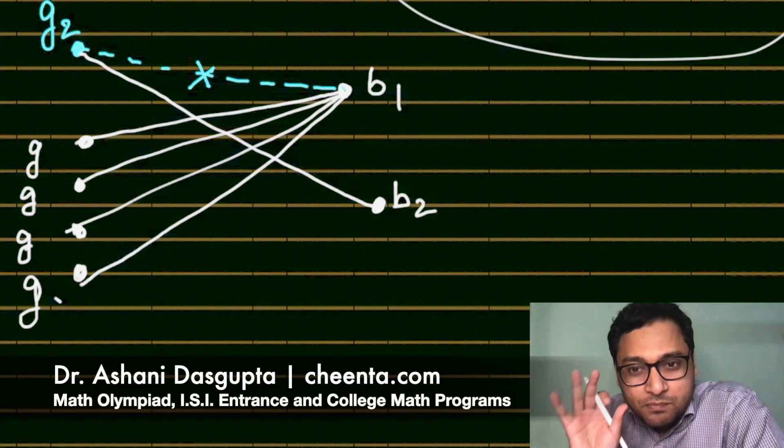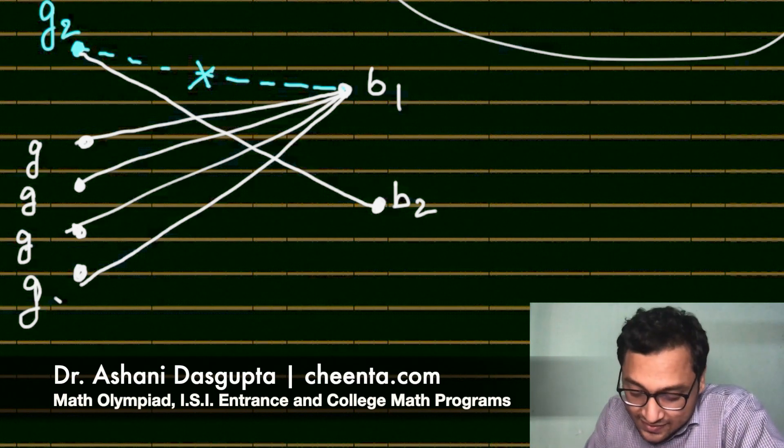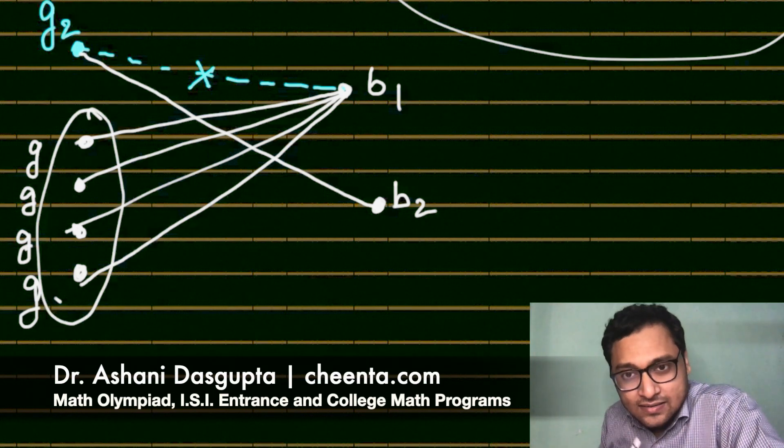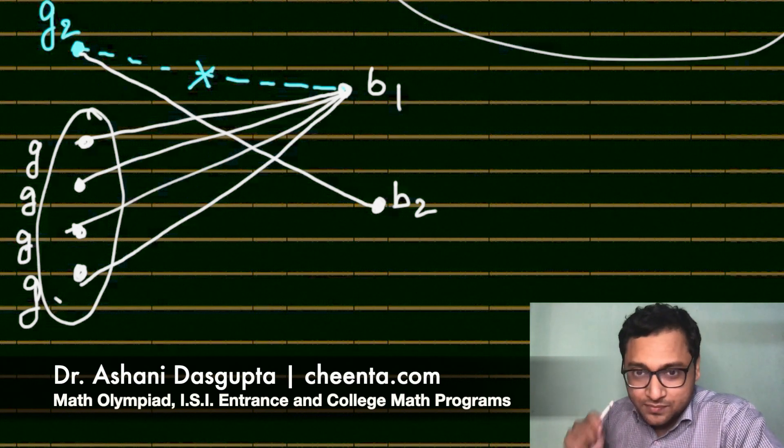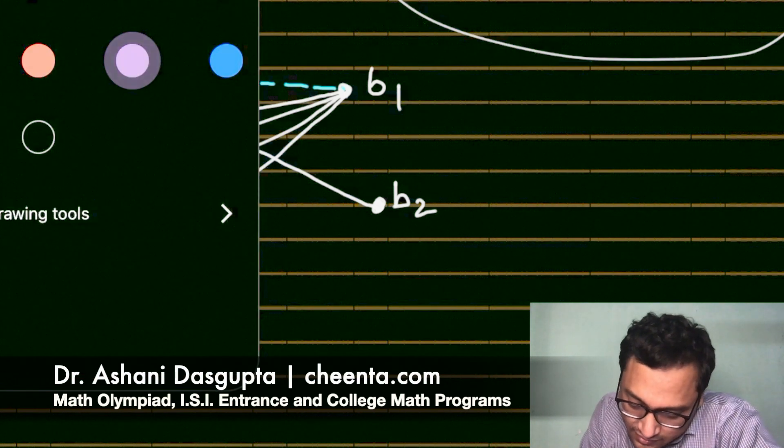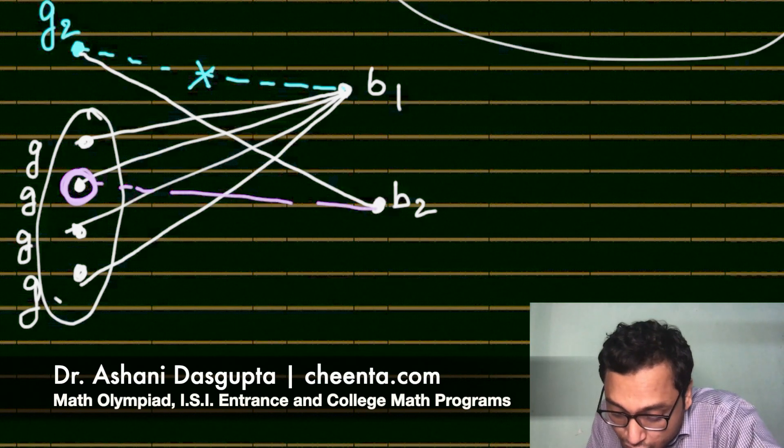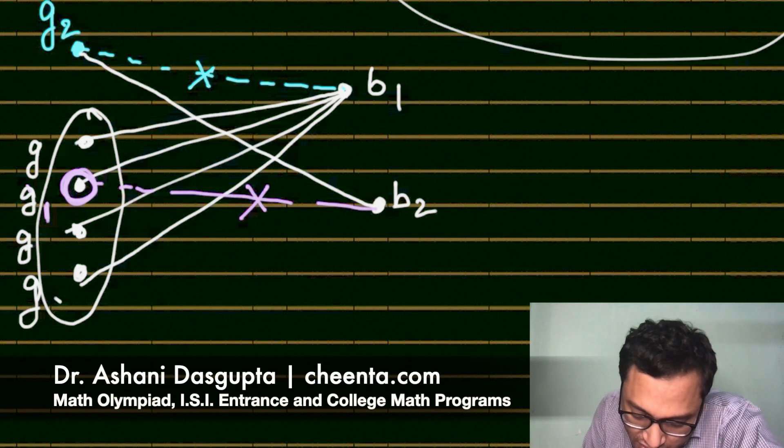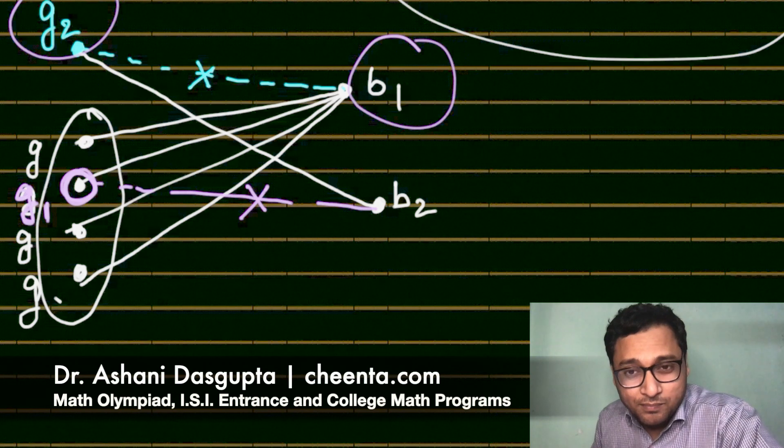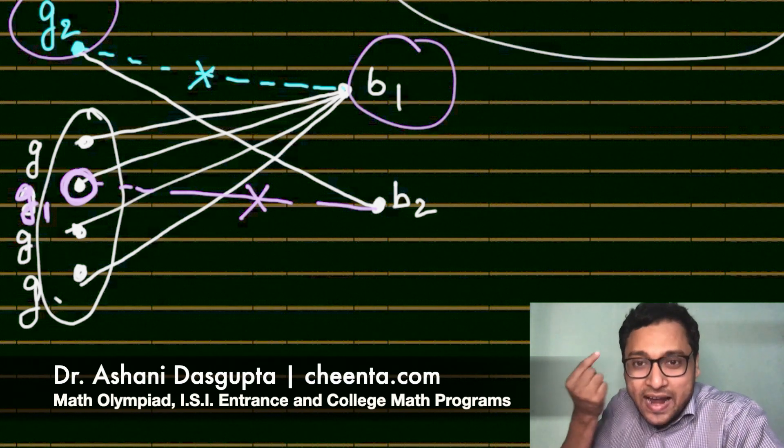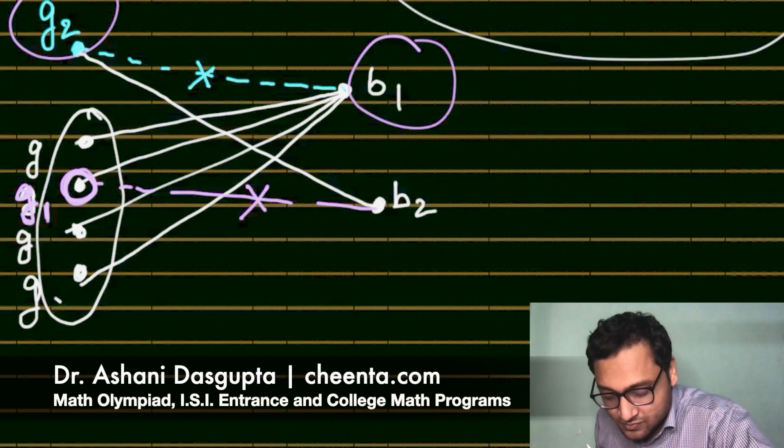Now let's focus on B2. If there is at least one girl in this set to which B1 is connected with whom B2 is not connected, then we are done. Think about it. Suppose there is this girl right here with whom B2 is not connected. Then we will call this girl G1. Then G1 does not dance with B2 and G2 does not dance with B1 and we are done. So if we can find even one dot to which B1 is connected, to which B2 is not connected, then we are done.